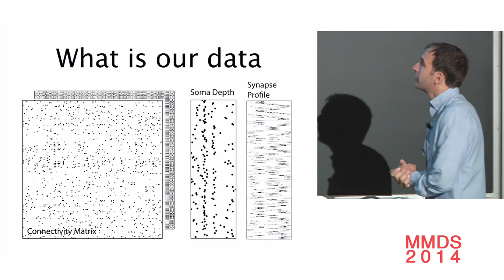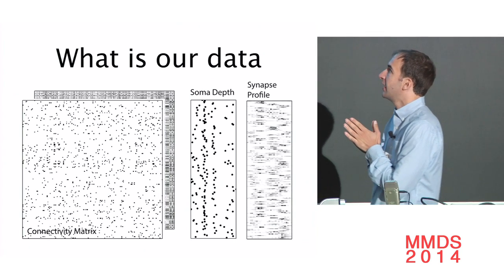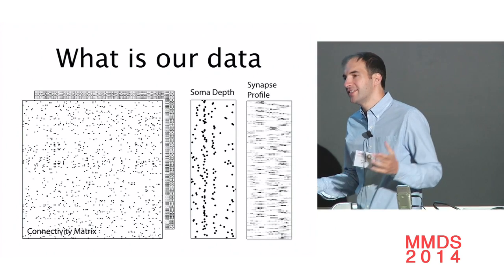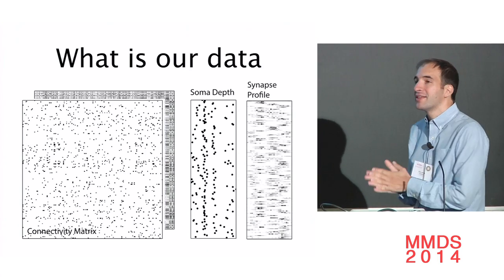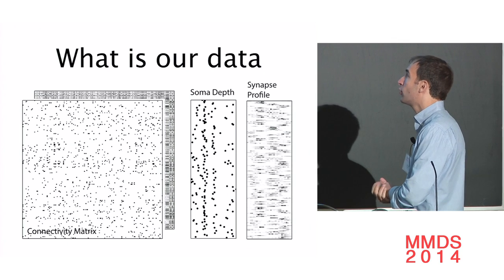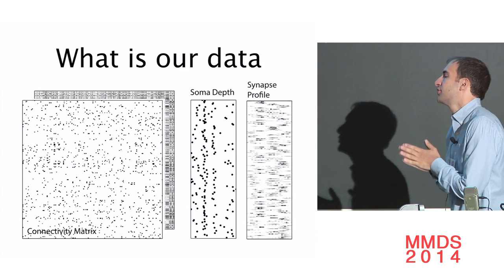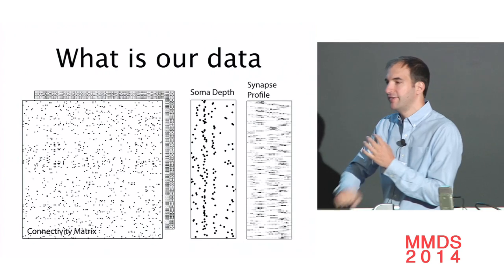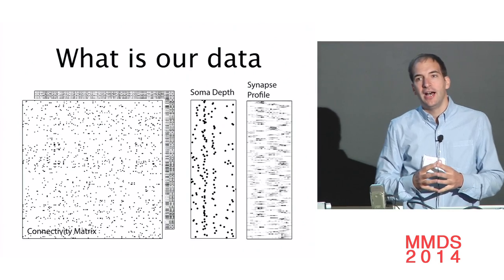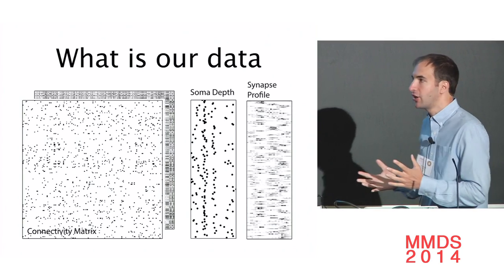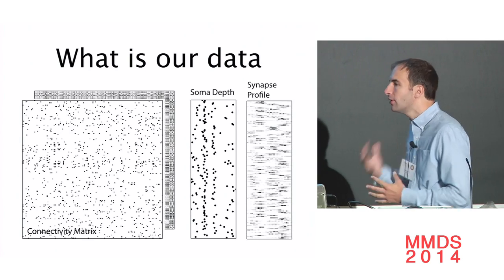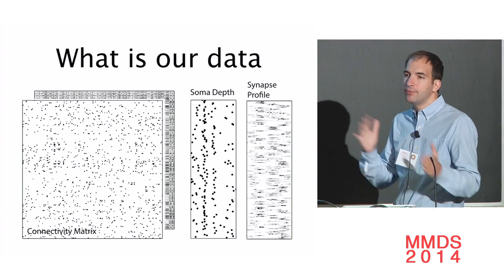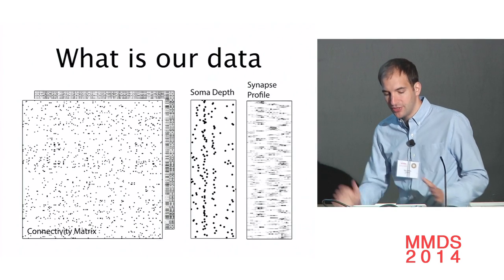Our input data is the following: a connectivity matrix showing how all cells interconnect, a distance matrix showing how far apart cell bodies are from one another, and the depth of each soma — the primary cell body. Every time I give this talk, biologists say the distance between cell bodies is a poor distance metric, and that's true, but it was a reasonable first pass. We're also taking in the dendritic arbor shape: neurons have this output cable — the axon — and then an input tree, the dendritic arbor, which tends to take inputs at certain points and tends to have a particular shape.